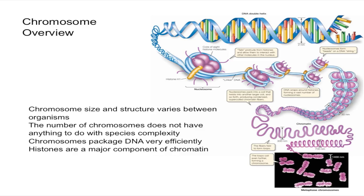To give you an idea of how efficiently DNA is packed, there's about 2 meters of DNA in every cell. Imagine how small each cell is and how it fits 2 meters of DNA into the nucleus. DNA is able to be wrapped up so tightly thanks to histones, which are a major protein component of chromatin. The histones are the protein part of chromatin.